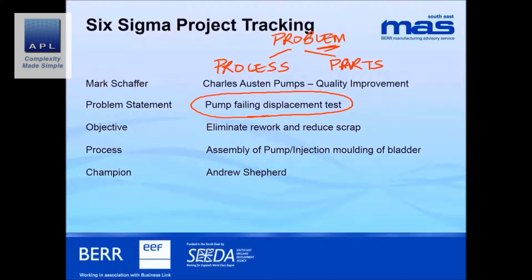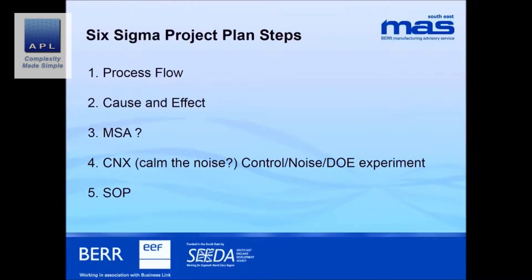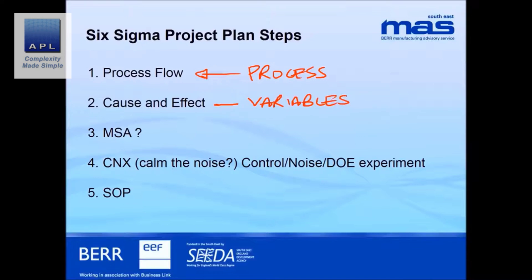Component swapping, in my experience, often takes you straight to the answer in a very simple, easy-to-understand way. Here's the traditional six sigma approach I would typically advise: go straight to the process, use a process flow, then a cause-and-effect diagram to identify all the variables in the current assembly process. Then check the measurement system — is it telling us lies? We'd do an MSA in order to do that.